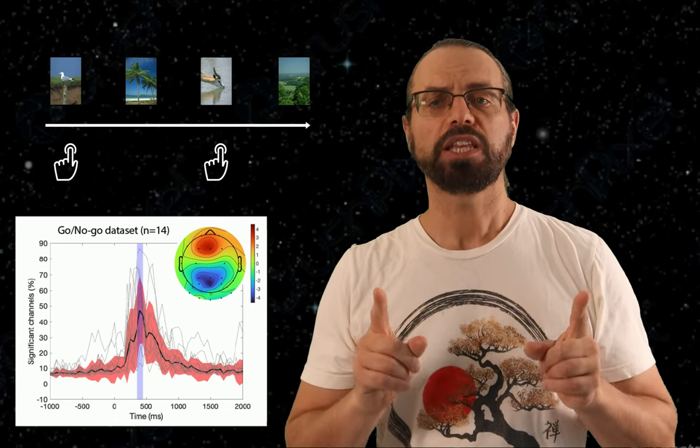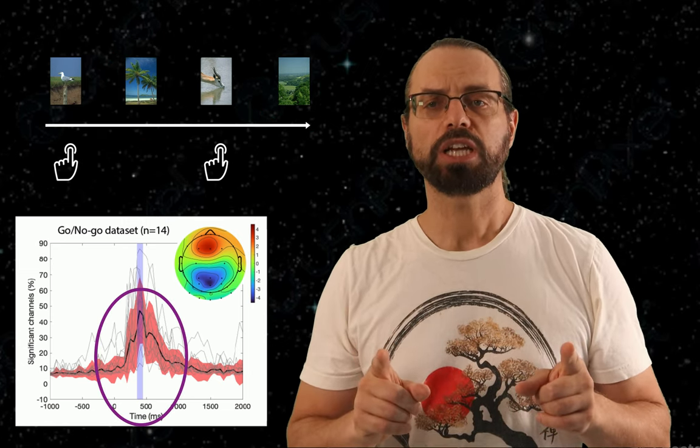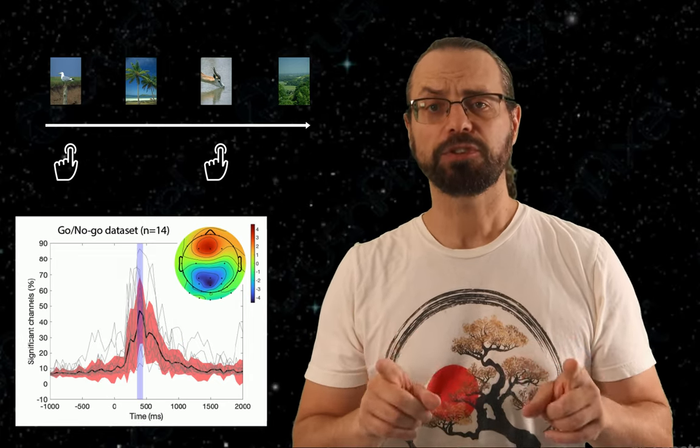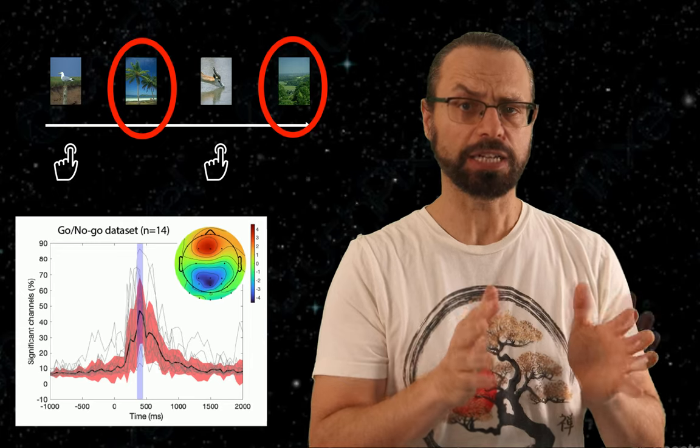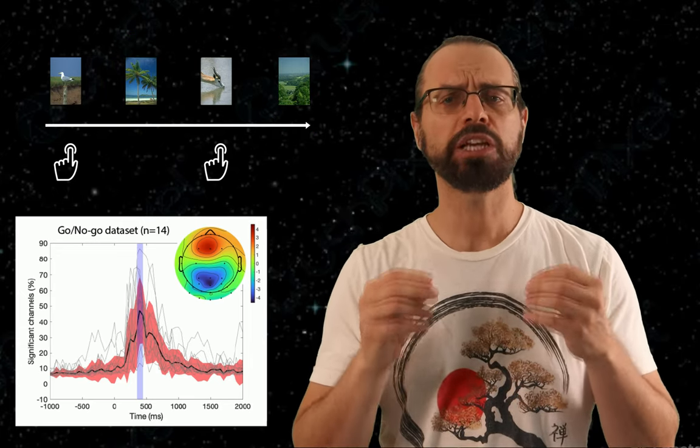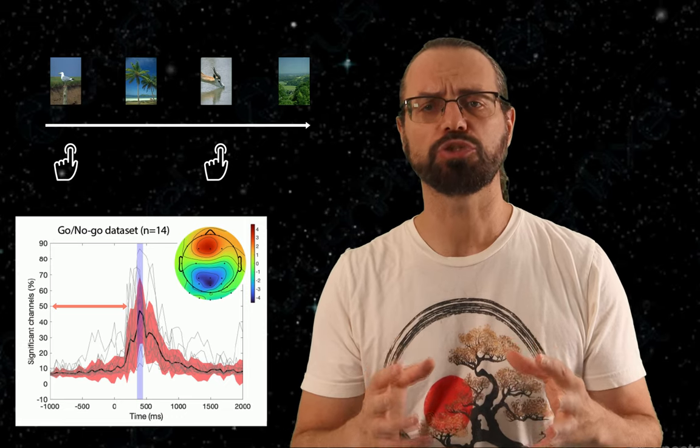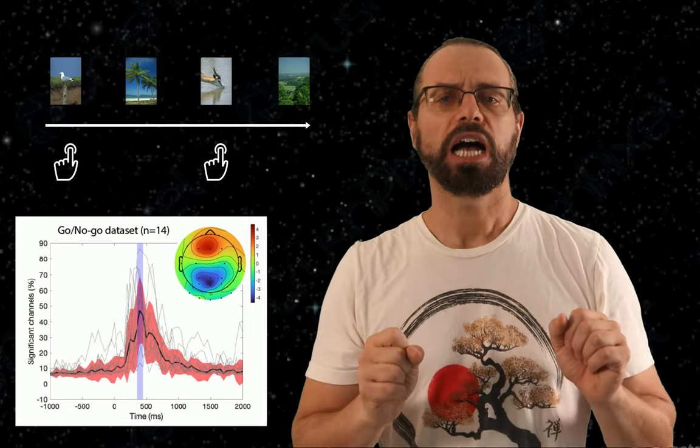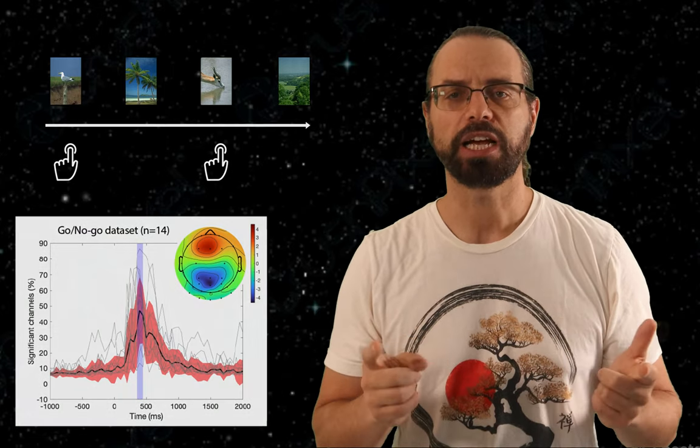When we looked at the ERPs, we picked the range 350 to 450 ms as the one where the difference between animals and distractor trials had the highest number of significant channels. Here about 50% of the channels were significant, although that varied across subjects as shown by the red shaded area.